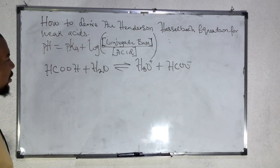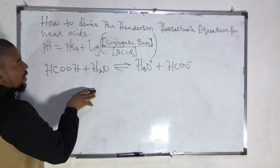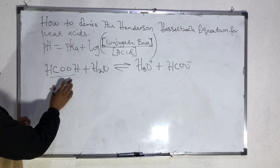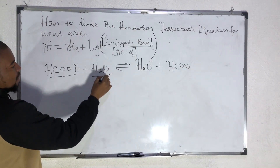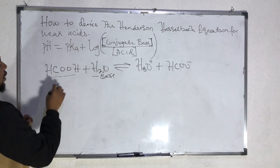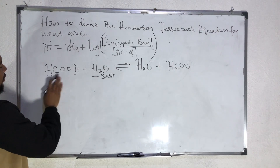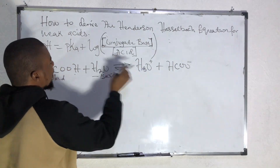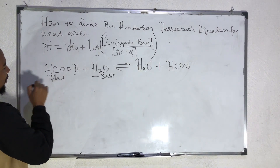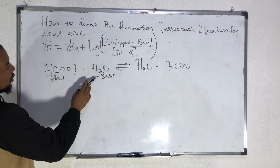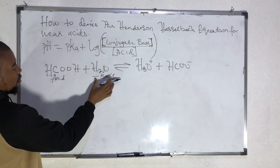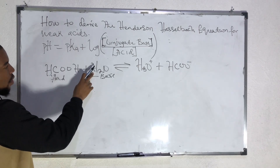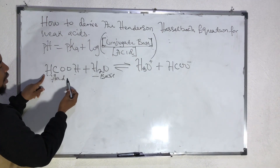How did I arrive at this? I'm going to use this expression to derive the Henderson-Hasselbalch equation for weak acids. Here we have formic acid — our weak acid. If I add water to it, water acts as a base in this case. When this acid donates a proton to the base H2O, the formic acid now becomes a conjugate base.